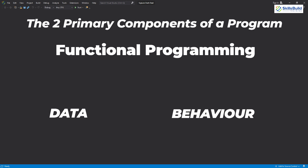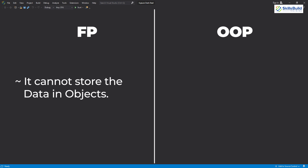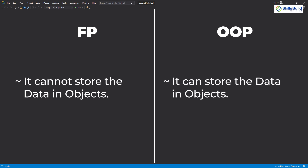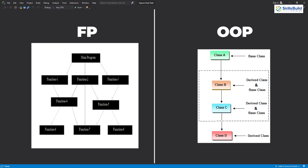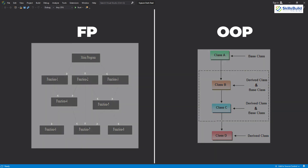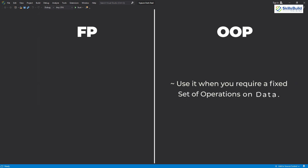Functional programming says that data and behavior are different from each other and should be kept separate. In functional programming we cannot store data in objects — we can only transfer it with the help of functions. In OOP we use objects to store data and must maintain those objects as inheritance levels grow. In functional programming, new objects are needed to execute functions, which requires more memory. You should use OOP when you require a fixed set of operations on your data, but as code evolves you can easily add new classes.